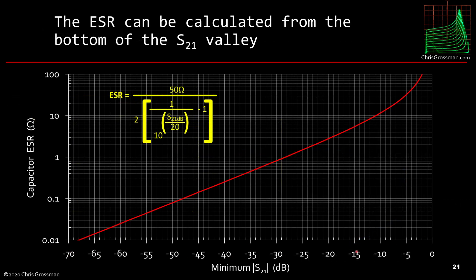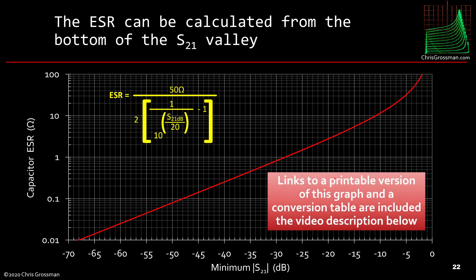So if you look here, this would be the depth of the valley down here, the minimum S21. And over here is, for a given S21, this gives you the equivalent ESR. And so we can probably measure easily down to ESRs of 10 milliohms. And you can measure up above 10 ohms, but you wouldn't want to use a capacitor with an ESR that high. So this is kind of the range that you can measure pretty easily and it's a useful range. Now I've made a printable version of this chart, as well as a conversion table. And you'll find links to those included in the video description below.